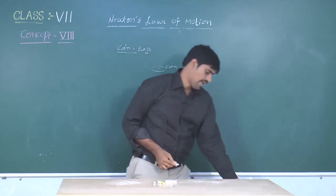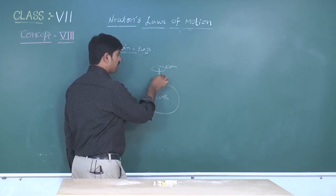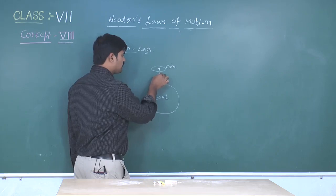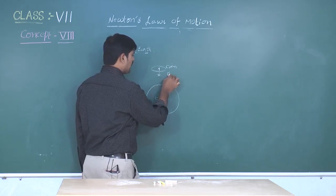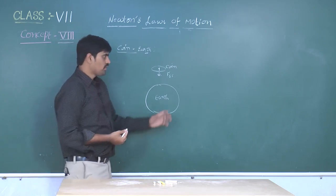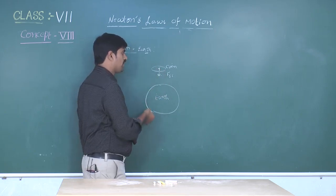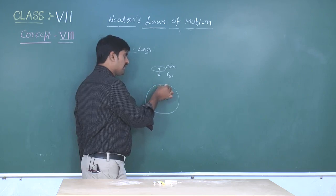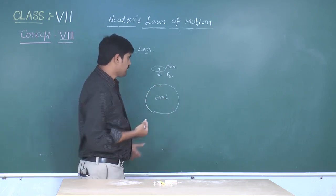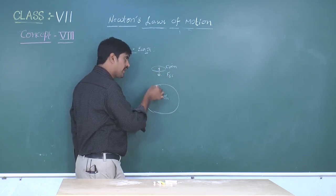A coin falls on the earth due to gravity because the earth attracts the coin towards its center. That means, the force exerted by the earth on the coin acts in the downward direction. Here, earth and coin are two bodies — there is an interaction between the two bodies. What Newton is saying is: how much force is exerted by the earth on the coin, the same force is exerted by the coin on the earth.